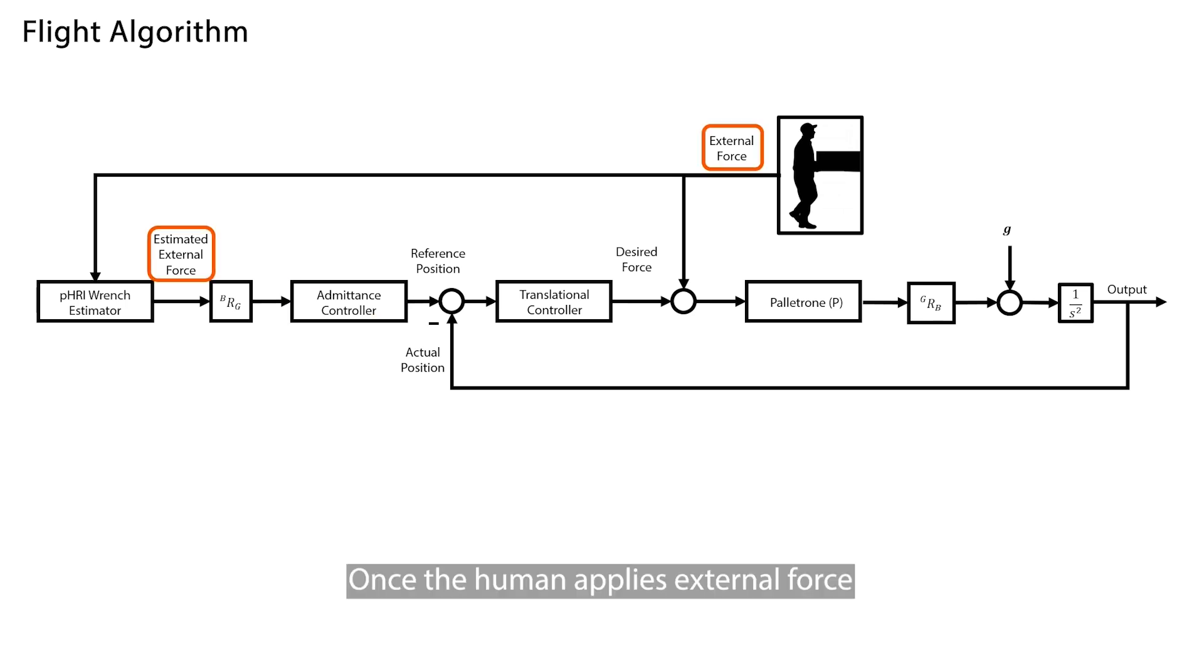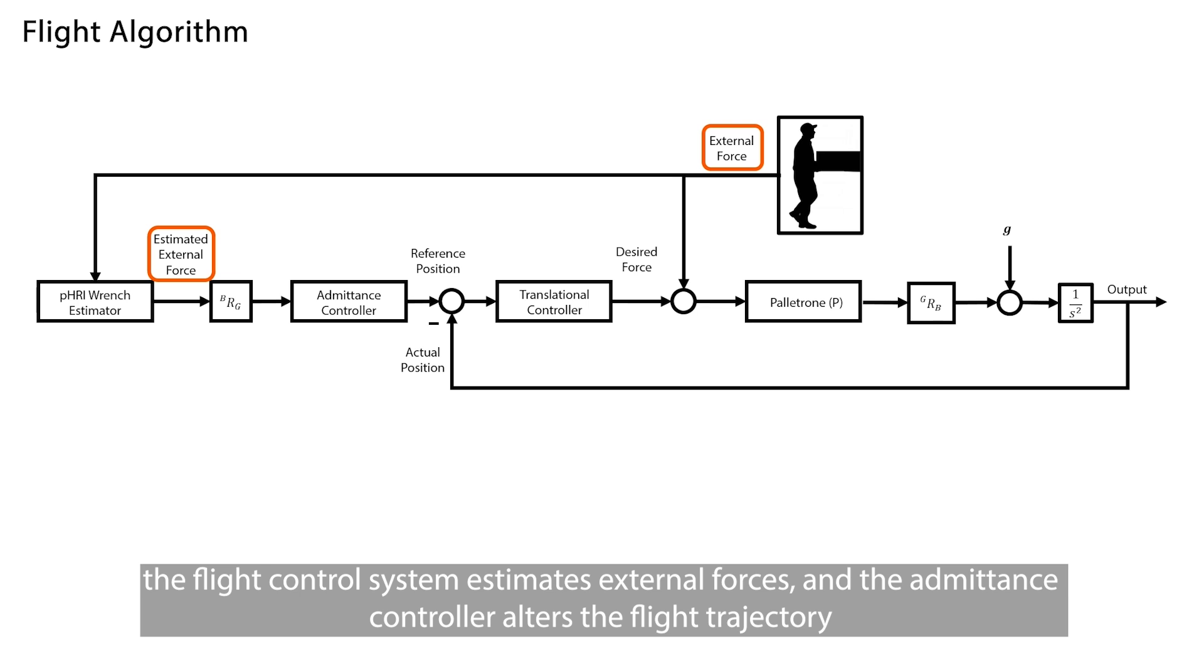Once the human applies external force, the flight control system estimates external forces, and the admittance controller alters the flight trajectory.